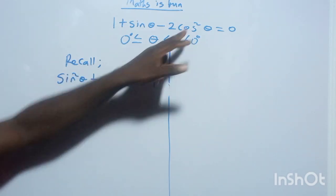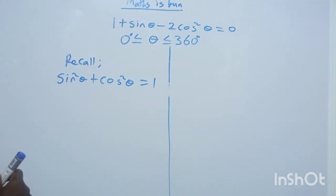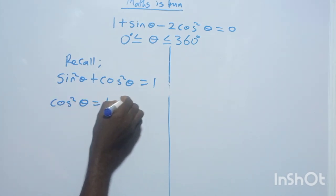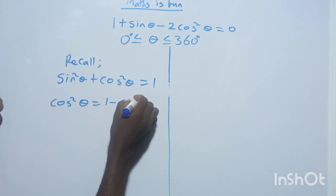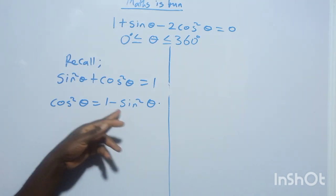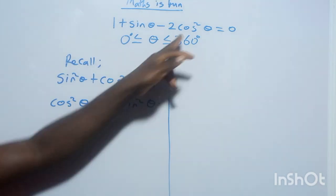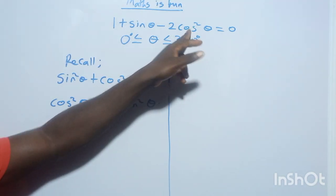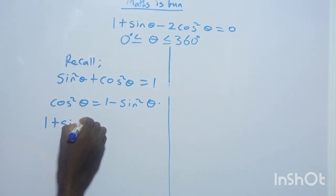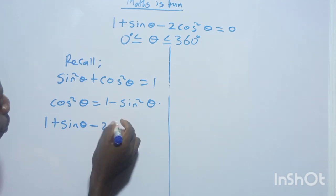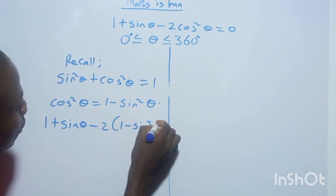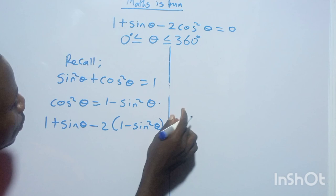So you can say cos²θ = 1 − sin²θ. You create an identity for this, then you replace cos²θ with that in this expression. So you can have: 1 + sinθ − 2(1 − sin²θ) = 0.